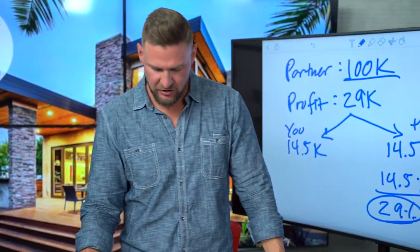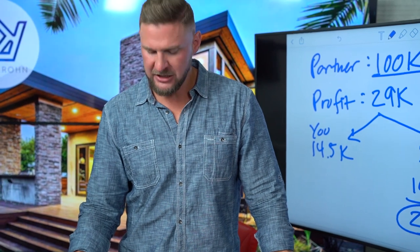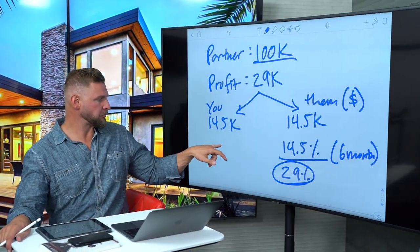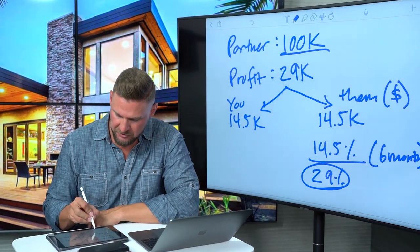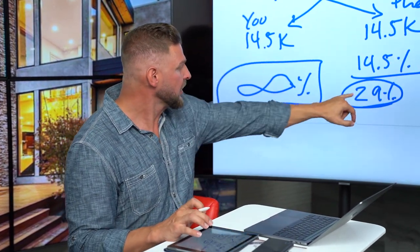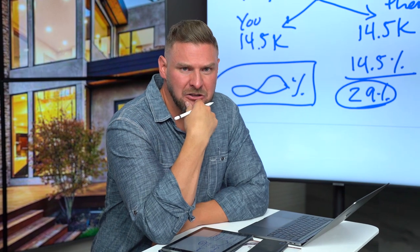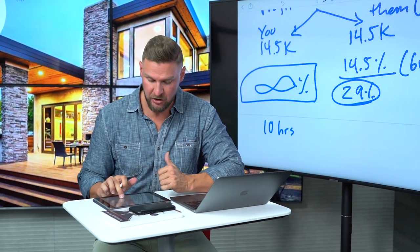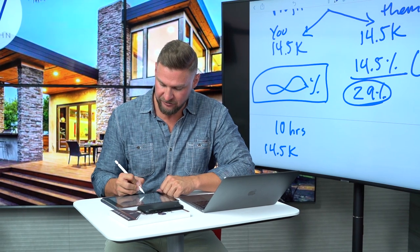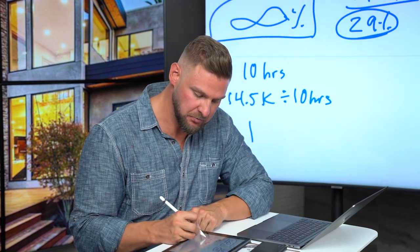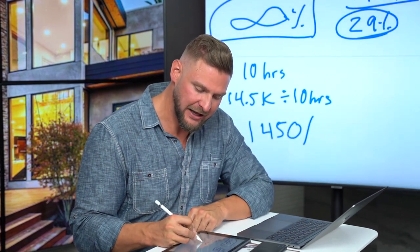Now let's calculate your ROI. You didn't put any money in. So if you got $14,500 and divide it by zero — no money in — that breaks the math. Your return is infinite. They made 29%; you made infinite. You put no money out. How do you calculate it then? How much time did you put in? If you put in 10 hours, take your profit of $14,500 divided by 10 hours — you made $1,450 an hour. Have you ever had a job that paid you $1,450 an hour?